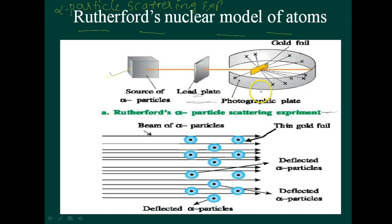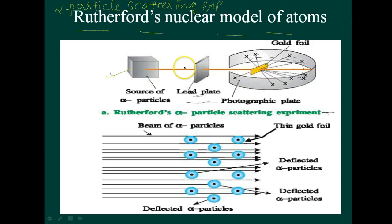After the thin gold foil, there is a circular fluorescent zinc sulfide screen around it. Whenever alpha particles struck the screen, a tiny flash of light was produced at that point.